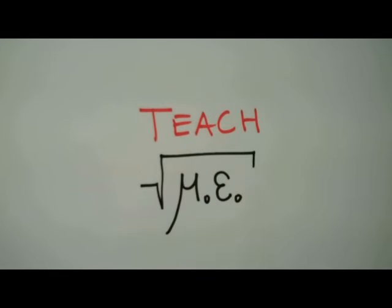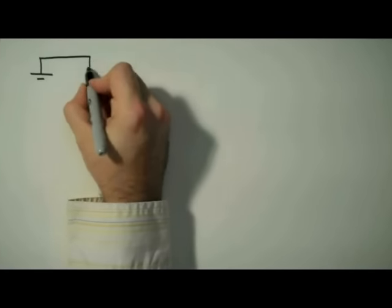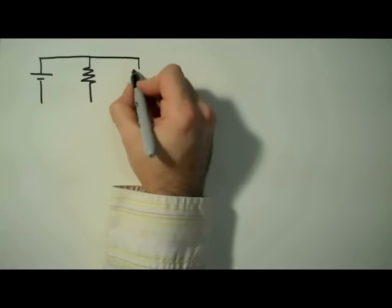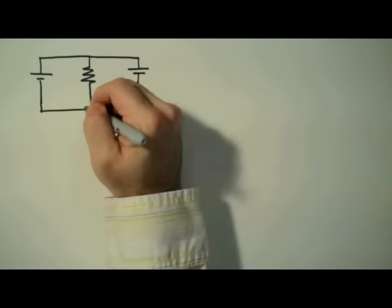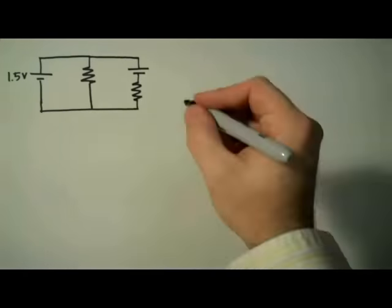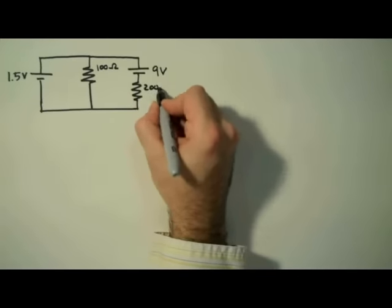Hello everyone, I'm Jesse Mason and for this edition of Teach Me, we're going to use Kirchhoff's rules to analyze a circuit. Specifically, we're going to determine the current through, the voltage across, and the power dissipated by the two resistors that you see here.